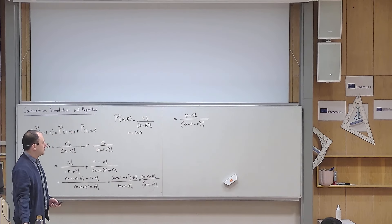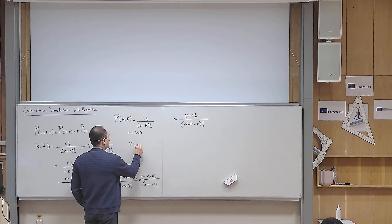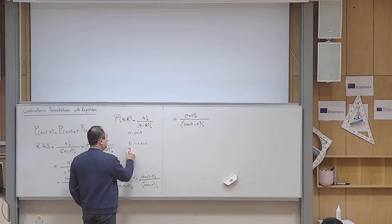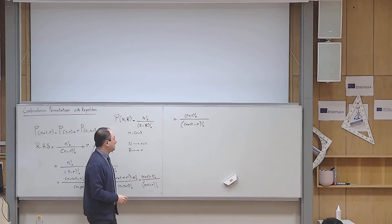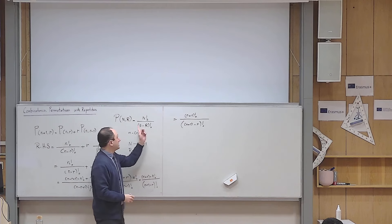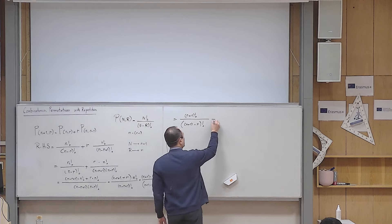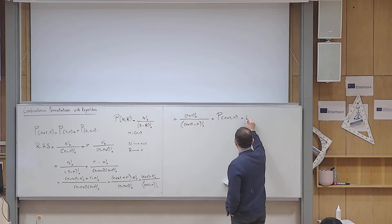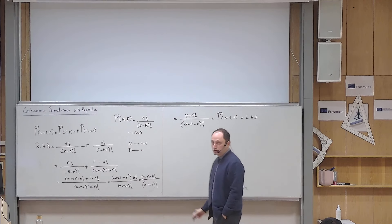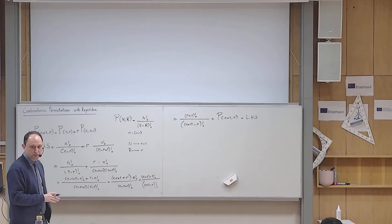Comparing this with the permutation formula P(N, R) = N factorial / (N minus R) factorial, if we set capital N equal to n plus 1 and capital R equal to r, we get exactly P(n+1, r), which is the left-hand side. So we showed that the right-hand side equals the left-hand side without any reference to counting problems — a purely analytic argument.